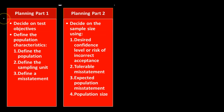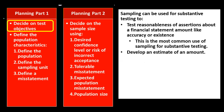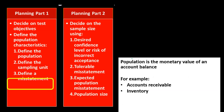Staying in the planning phase, we consider deciding on test objectives. Sampling can be used for substantive testing — as opposed to testing of controls — to test the reasonableness of assertions about a financial statement amount, such as accuracy or existence. This is the most common use, though we can also develop an estimate of an amount using this method.